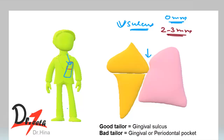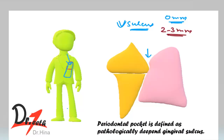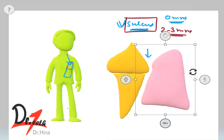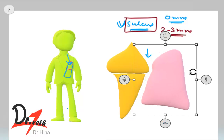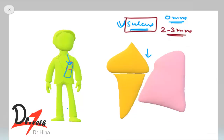Now if this space gets deep enough because of periodontal disease, it is called the periodontal pocket. In other words, the periodontal pocket is defined as a pathologically deepened gingival sulcus. So when this sulcus deepens pathologically and gets deep enough, that is called the periodontal pocket.